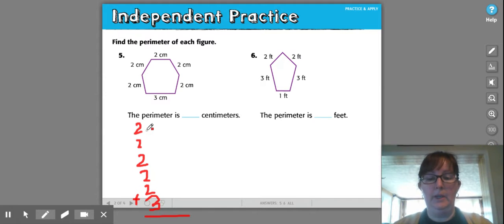And we're going to start from the top, counting by twos. So we have two, four, six, eight, ten, and then ten plus three more. So that gives us a perimeter of 13 centimeters.